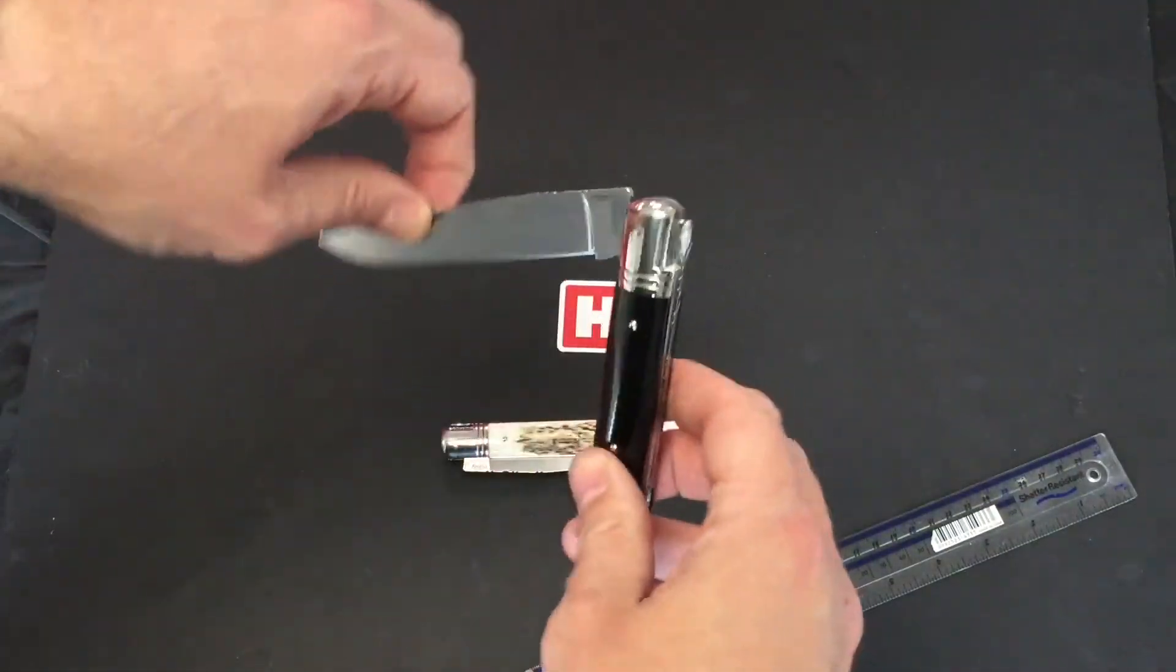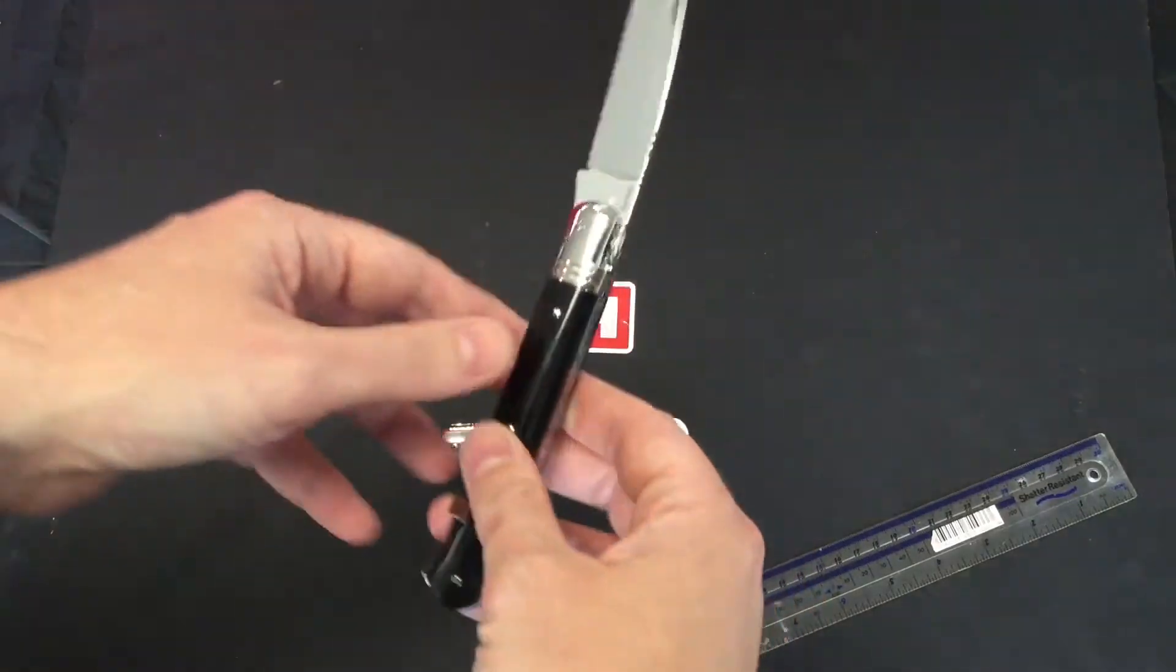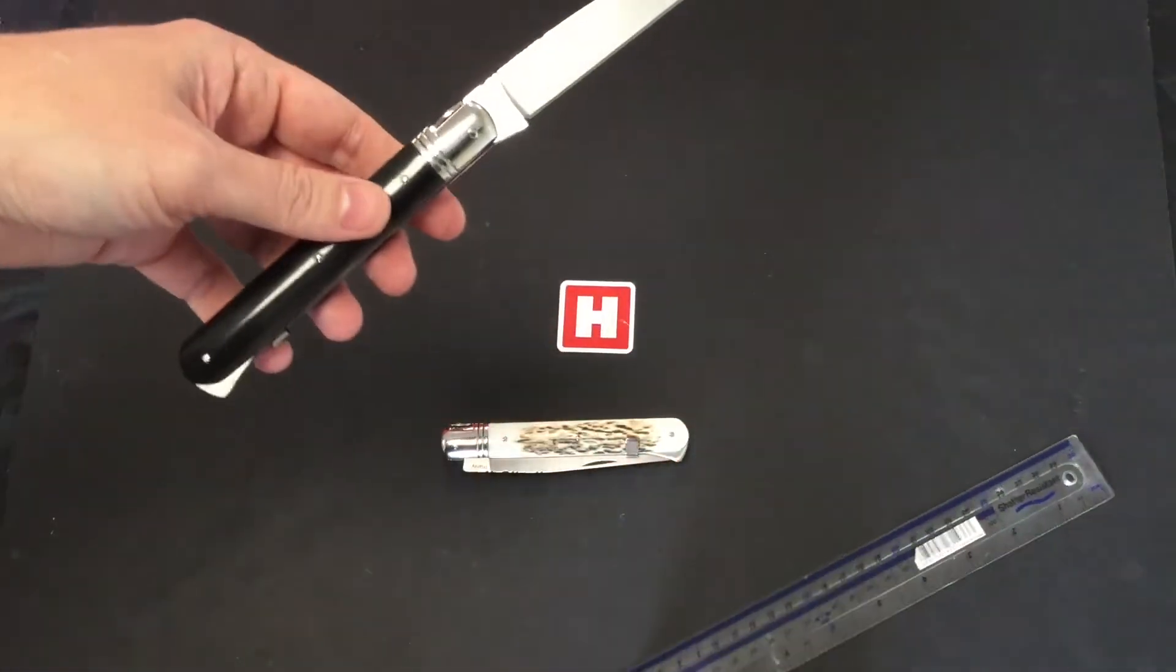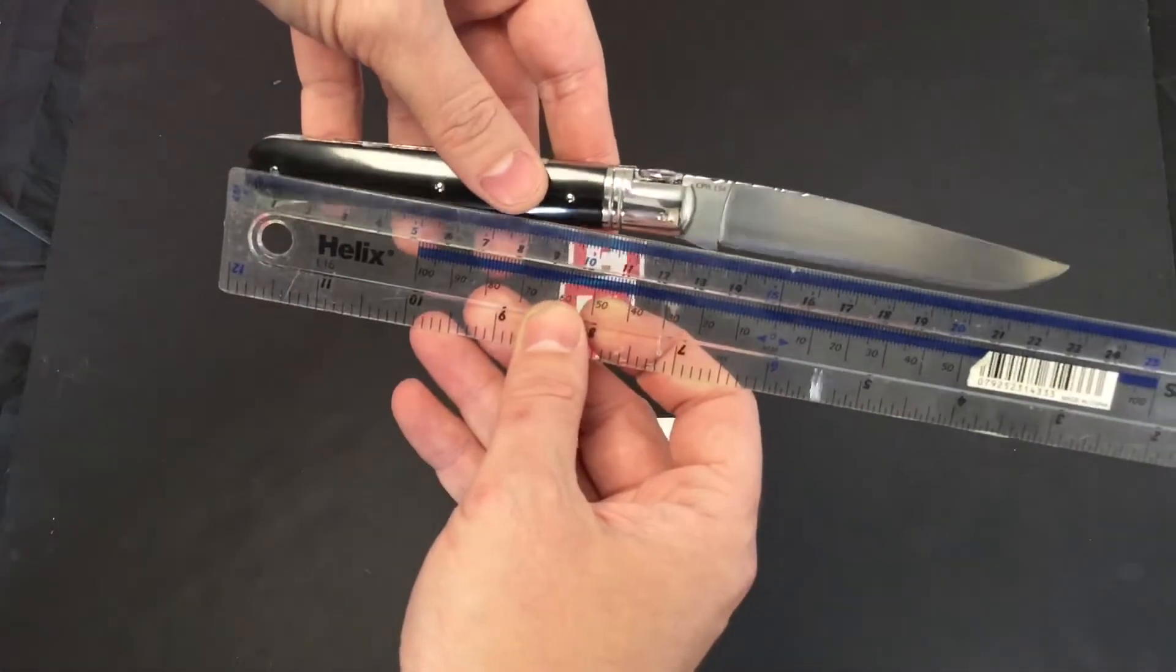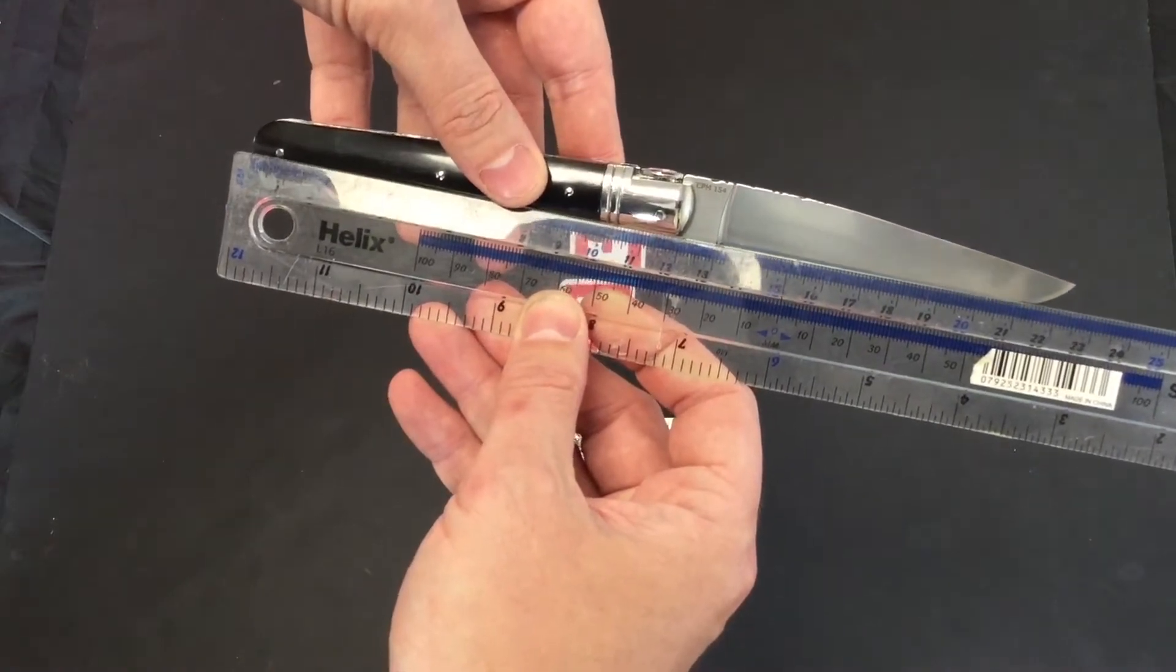Big nail nick. If you unfold it, you can hear a nice strong lock into place. Give it a measure now, and we're looking at twenty-one and a half centimeters.